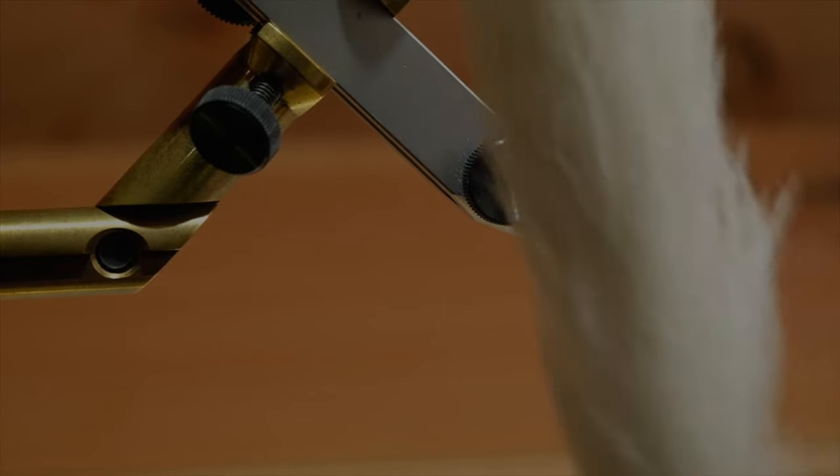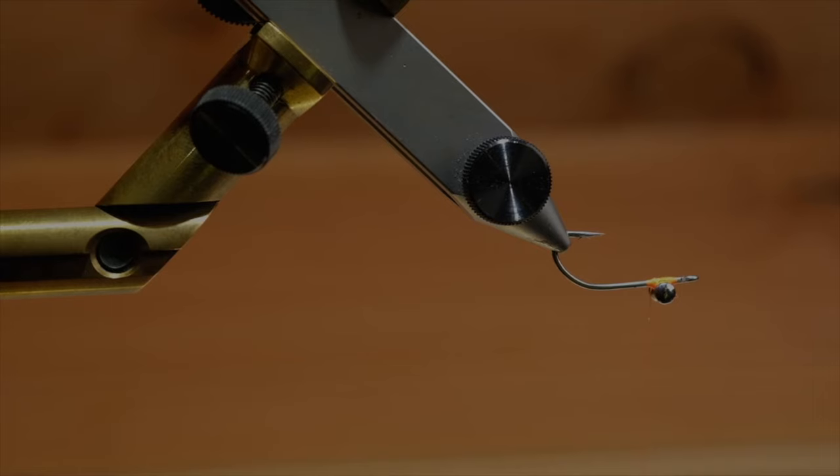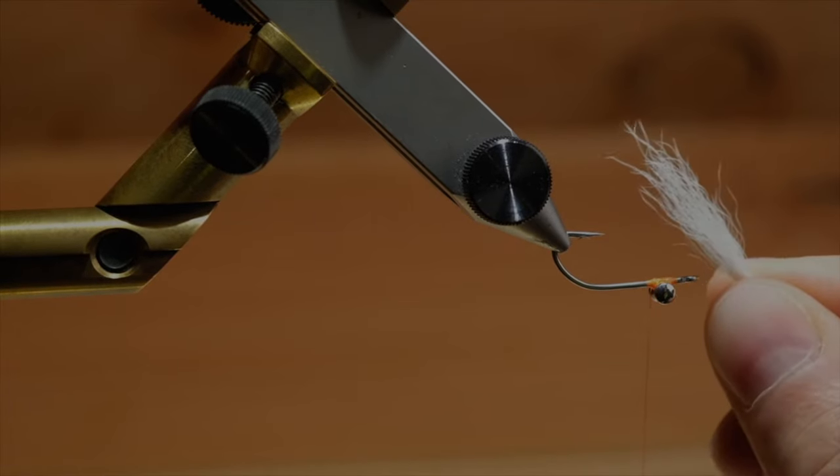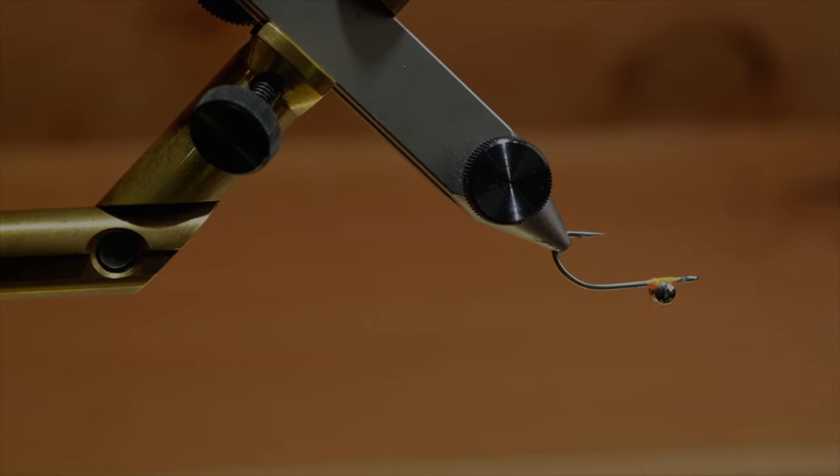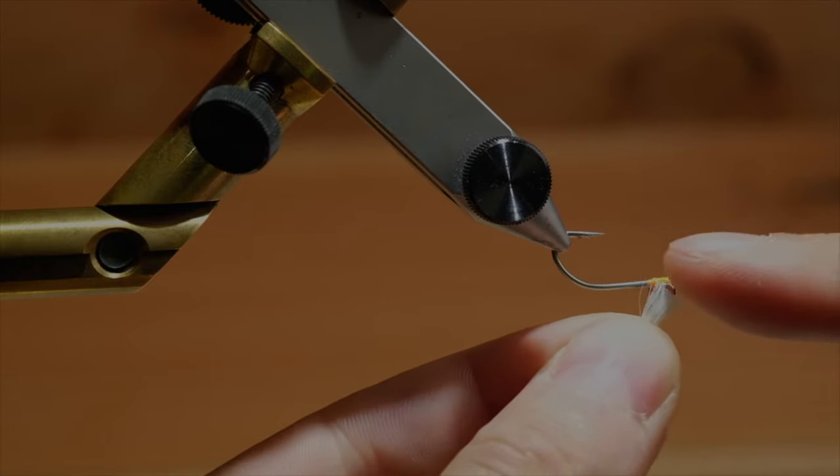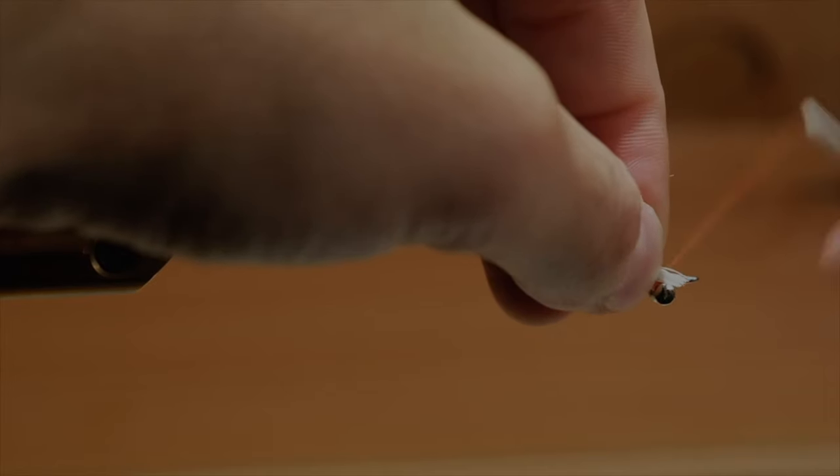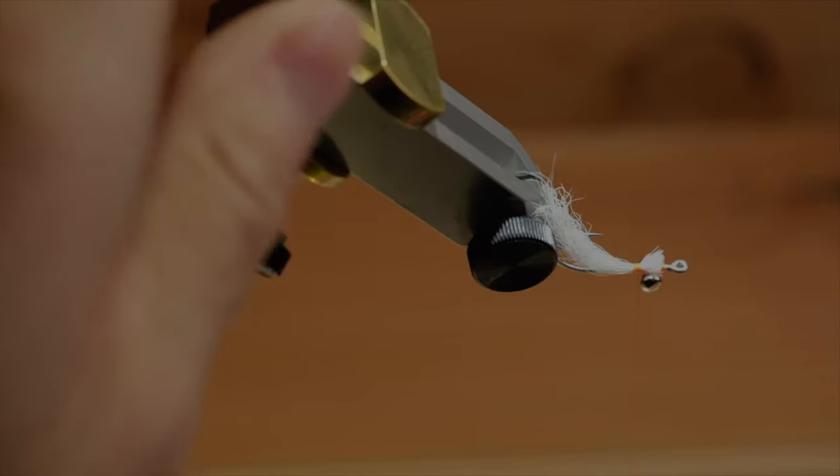Then we'll take some calf tail, already prepared a little piece. The important thing is not to use a lot of hair. I would suggest that you take half of what you think you need. That's usually more than enough. There's a little bit of underfur in here. Get rid of that. Measure it. Let's trim up my scissors so that the butt ends are straight. Tie them in on top. Make sure it's in the middle of the hook.